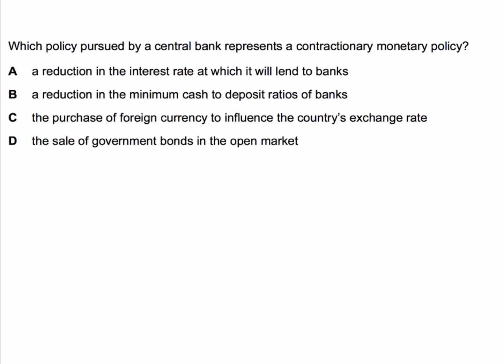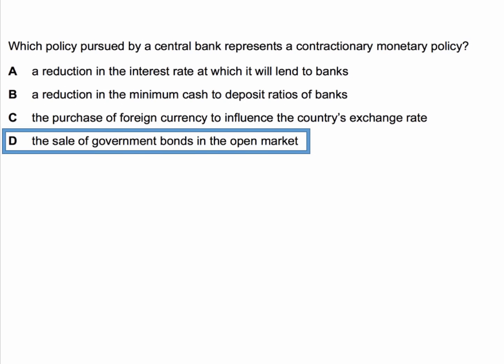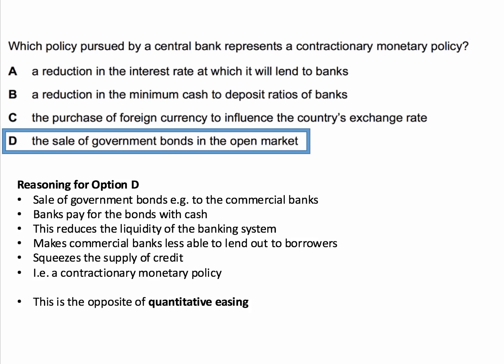The right answer to this question is D — the sale of government bonds in the open market. The sale of government bonds is when the central bank sells bonds to the commercial banks. The banks will then pay for these illiquid bonds with cash, and that act of paying means the liquidity of the banking system is reduced.